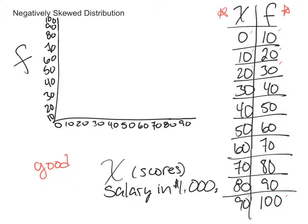If we graph it over here in our histogram, you'll see that who earned $0 or a little bit — like $10,000 — we'll go about there. We had 20 people earn $10,000, so a little bit better. This is on a continuous variable, so salary — money is always on a continuous scale — so we're going to be making a histogram, not a bar graph. Then we had 30 people make $20,000, so we're going to keep climbing, and 40 people made $30,000. We had 50 people make $40,000.